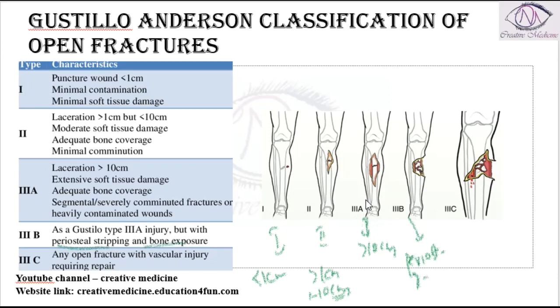In grade 3b, bone is exposed and periosteal stripping is seen. And in grade 3c, the vessels are injured, so there is vascular injury present in grade 3c.